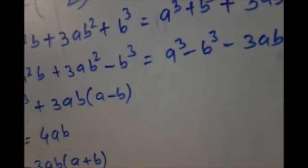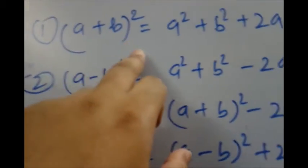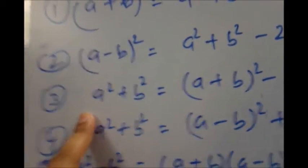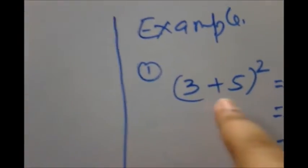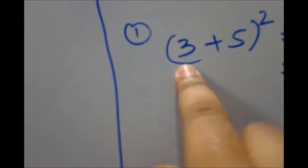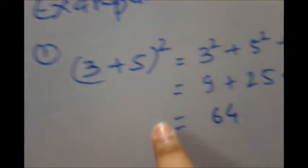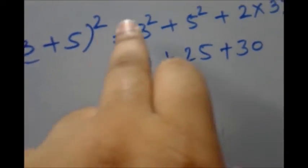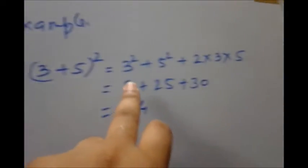Let's have one example. If you want to use the formula (a + b)², like if you have to get the value of 80 squared, you can split it. Let's look at the example I have written: (3 + 5)². You can assume 3 as a and 5 as b, and then apply the formula. (3 + 5)² — the formula is (a + b)² = a² + b² + 2ab.